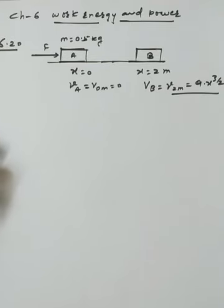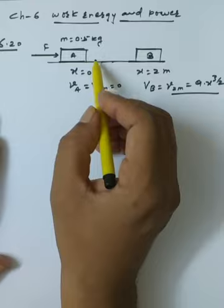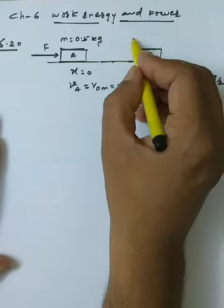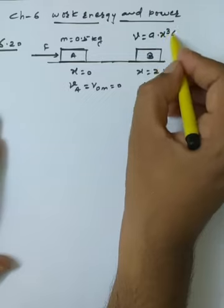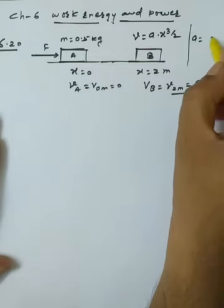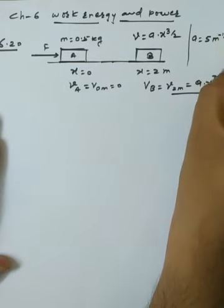Chapter 6: Work, Energy and Power, numerical 6.20. A particle of mass 0.5 kilogram travels in a straight line with velocity V = ax^(3/2), where a = 5 m^(-1/2) s^(-1).